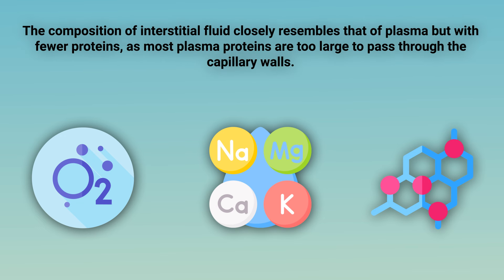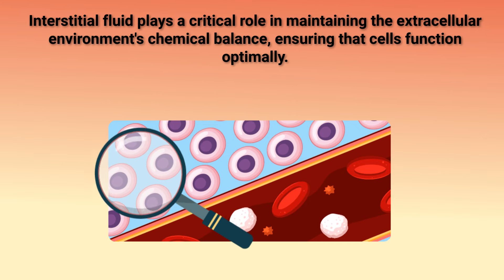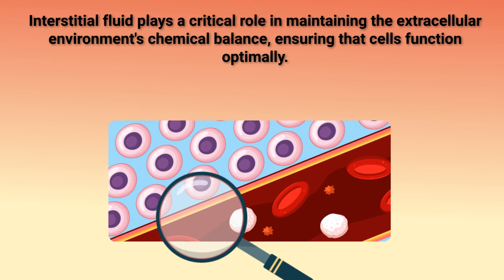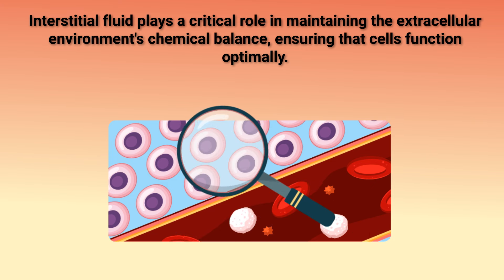The composition of interstitial fluid closely resembles that of plasma but with fewer proteins, as most plasma proteins are too large to pass through capillary walls. Interstitial fluid plays a critical role in maintaining the extracellular environment's chemical balance, ensuring that cells function optimally.